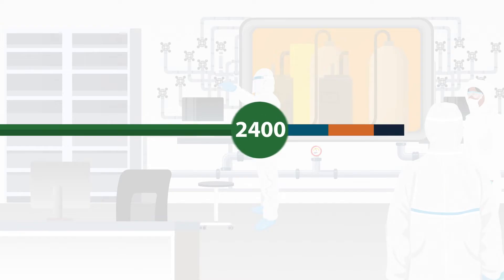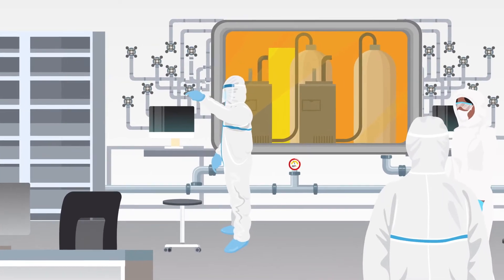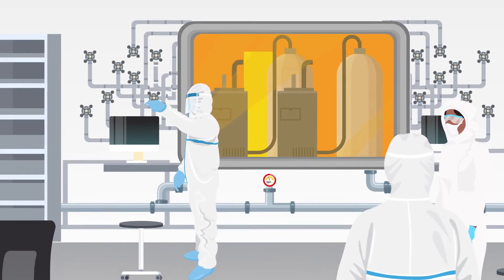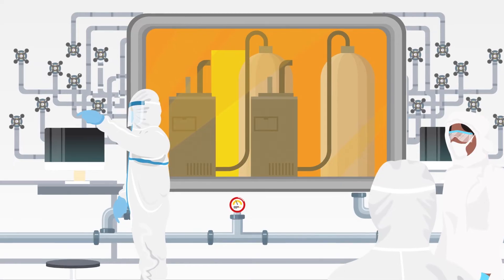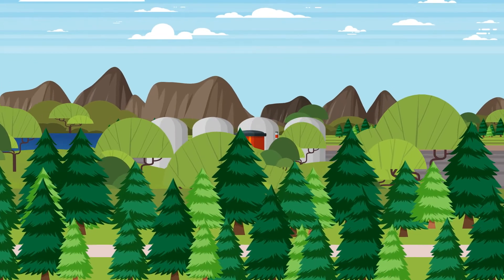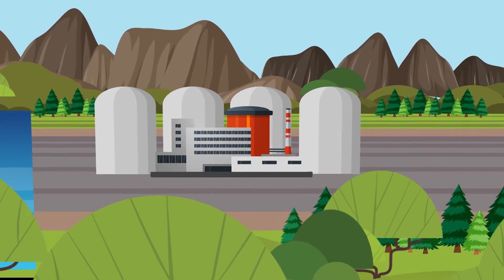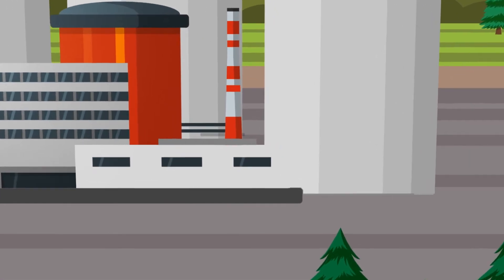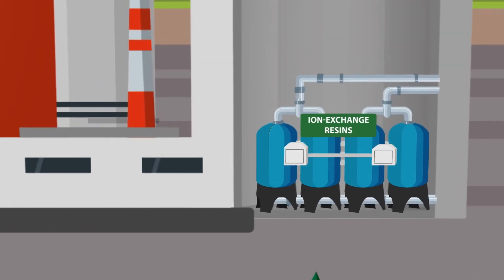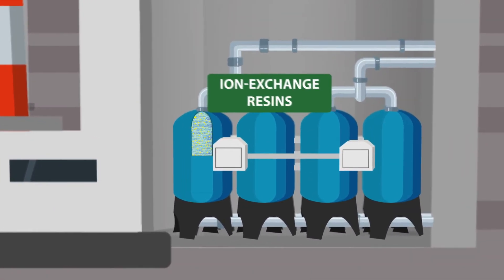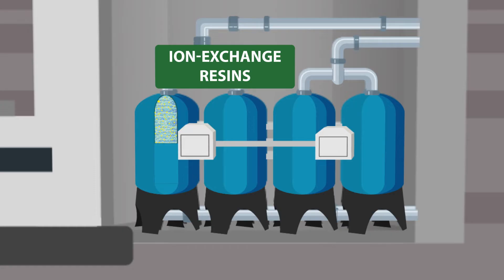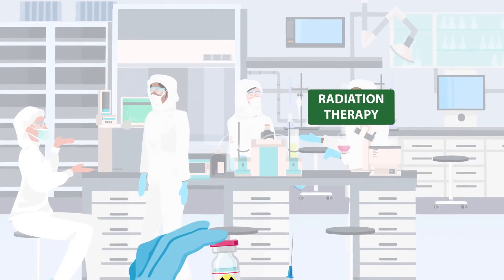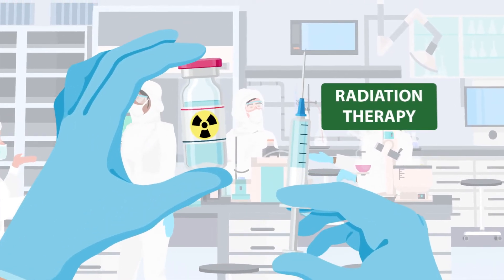Nuclear power plants, prototype and research reactors, test facilities, and radioisotope manufacturers and users produce intermediate level waste. It could come in the form of refurbishment waste such as old components, ion exchange resins, and some radioactive sources used in radiation therapy.